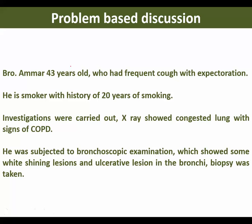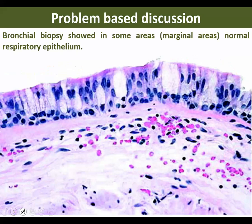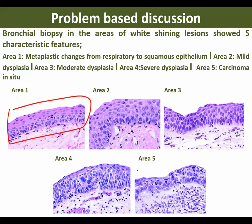Normally a case comes like this: a 43-year-old male having cough with expectoration — cough with sputum — and a 20-year history of smoking. So we do bronchoscopy, we see inside what is happening, and he is having some white lesion and ulcer. They take a biopsy from that and send it to the pathology lab, then we do staining and other processing. This shows how the respiratory epithelium has changed to squamous because of 20 years of smoking.